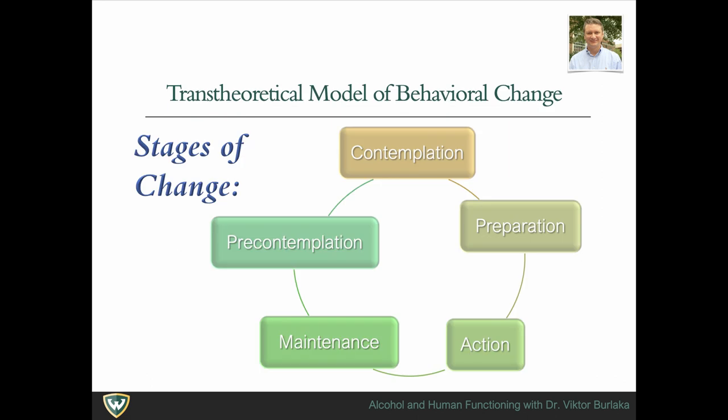The transtheoretical model of behavior change describes the processes and stages typically experienced in the course of intentional behavior change. The model originally emerged from analysis of psychotherapies and was described by Prochaska and DiClemente, then applied to smoking and other addictive behaviors. Change is seen as a circular, not linear, process.